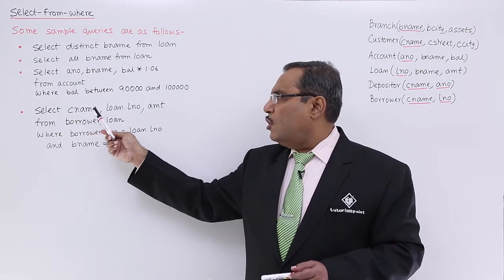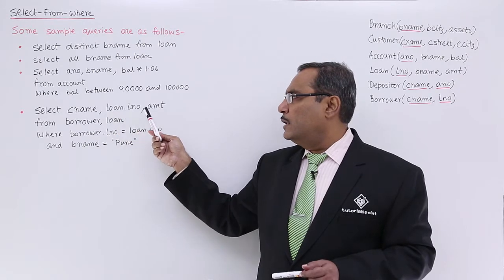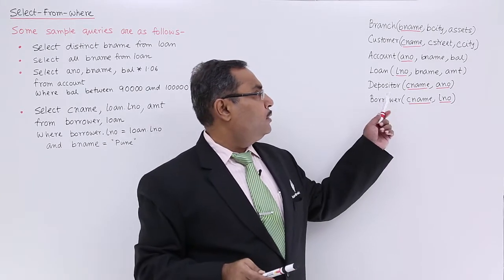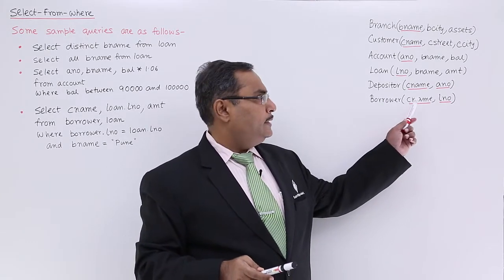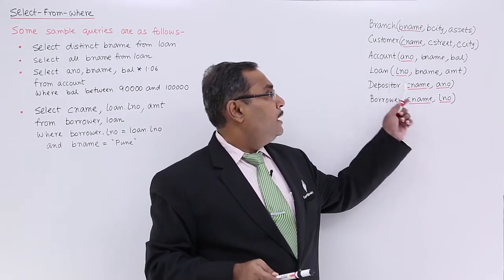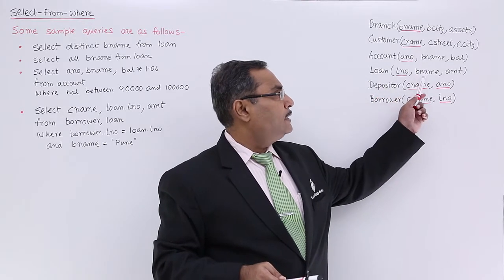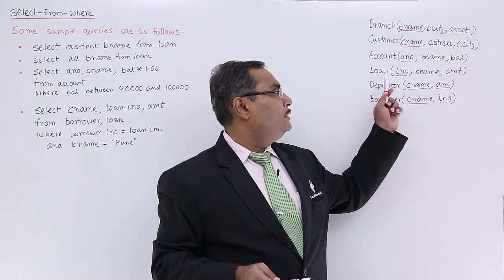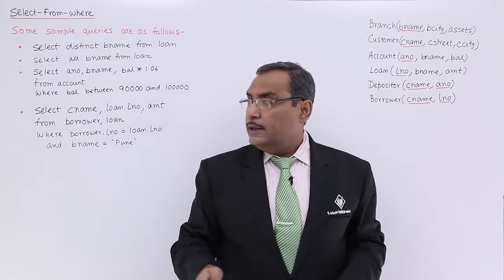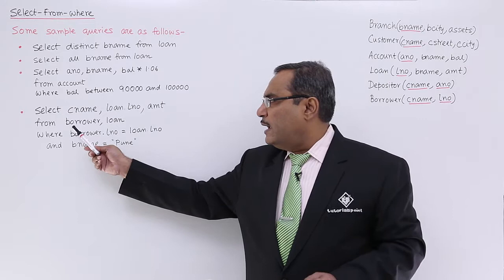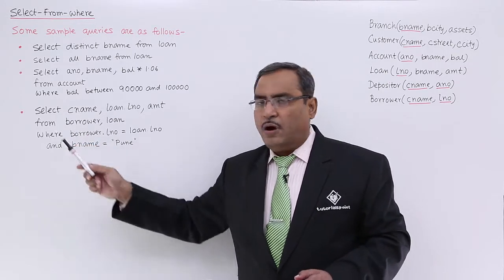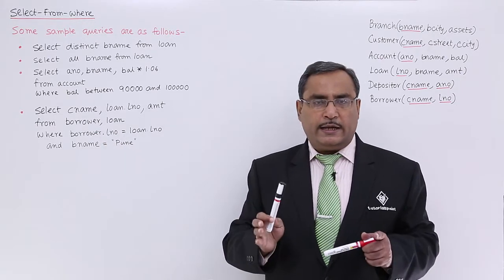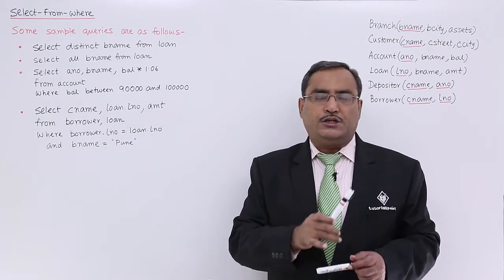Select CNAME, loan dot loan number, amount from borrower, loan. Let me come to the borrower and loan first. Borrower has customer name and loan number, and loan has loan number, branch name, and amount. Here you find that loan number is common between borrower and loan. Now, as we are writing two relation names after from,